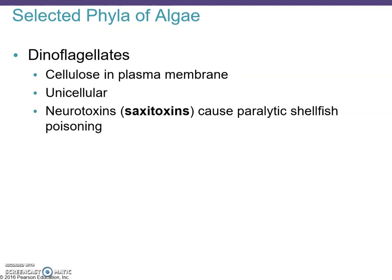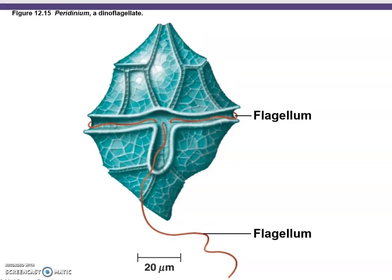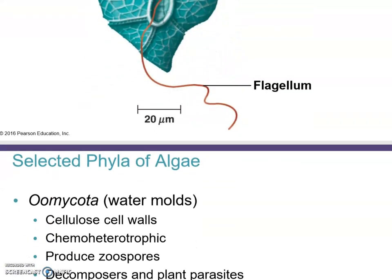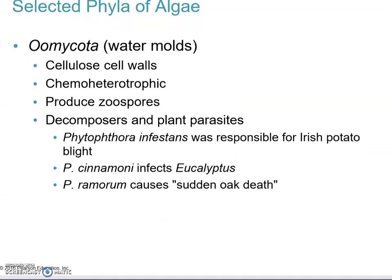Moving on to dinoflagellates: they have cellulose and plasma membranes, are unicellular, and can produce a neurotoxin called saxitoxin, which causes paralytic shellfish poisoning. Here is an example of a dinoflagellate — you can see the flagellum, hence the name.